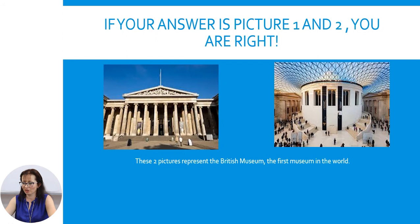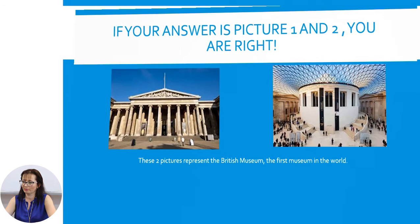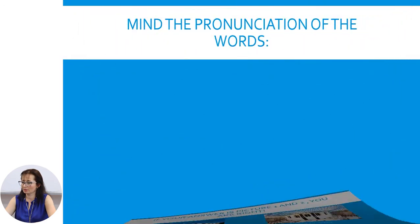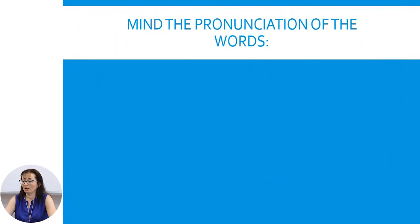If your answer is pictures 1 and 2, you are right. These two pictures represent the British Museum, the first museum in the world. Now, let us go to pronunciation.